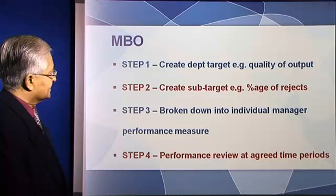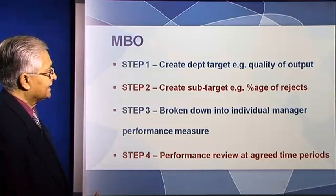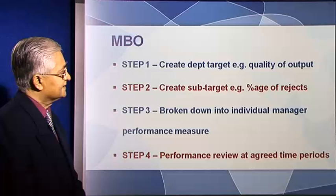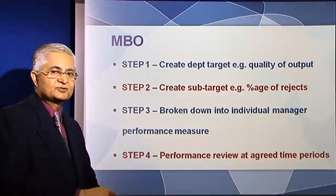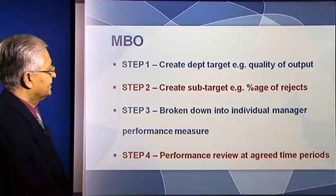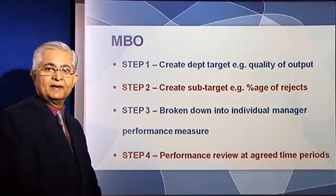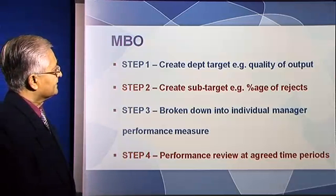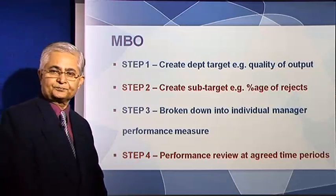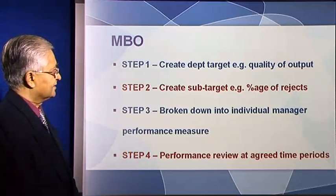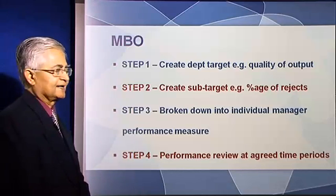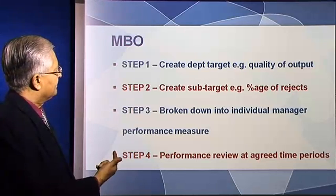Step two is we need to create a sub-target — a sub-target which defines this target in a more operational, more actionable way. Quality of output, one way in which it could be made actionable is by saying that let us reduce the percentage of rejects. If that is our target — if the target of the manufacturing department is to reduce the percentage of rejects — that would help it to achieve step one.